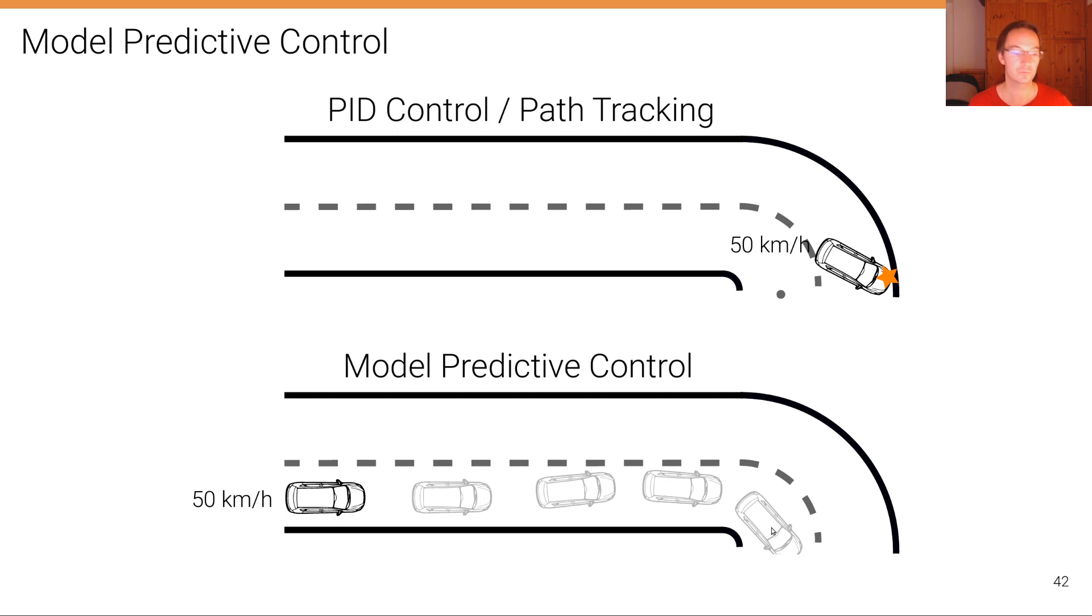Which means we can already start decelerating now. We are following this trajectory, and at every time step, model predictive control recalculates its T future time steps.